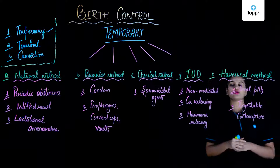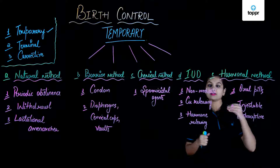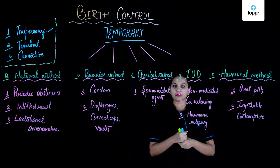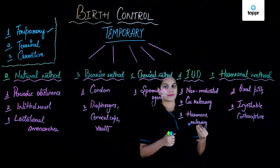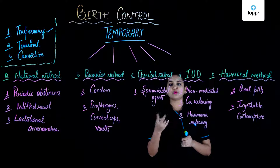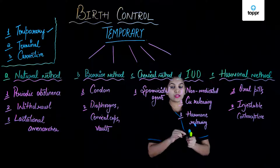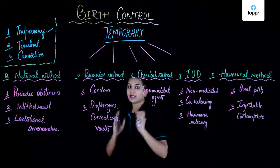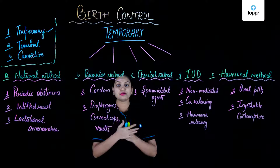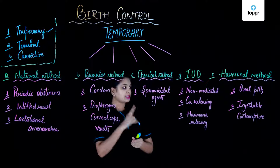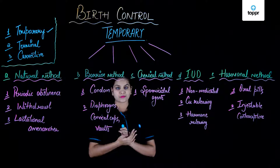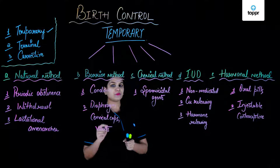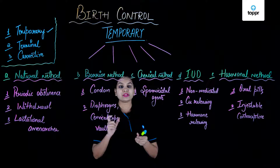The last temporary method is the hormonal method, where certain hormones are used, usually given to females. The first approach is oral contraceptive pills — a mixture of estrogen and progesterone, or progesterone alone, is given to a female to avoid ovulation. These affect the pituitary gland so that it does not produce FSH (follicular stimulating hormone), thereby preventing ovulation. Common examples include Mala N, Mala D, or Saheli — notably, Saheli was researched at CDRI Lucknow.